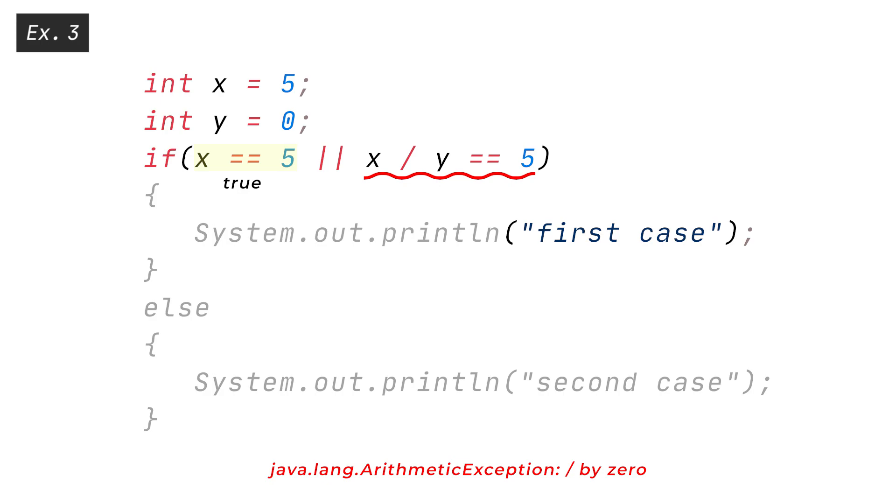While this is a very simplistic example, short-circuiting is very functional in preventing various runtime errors, such as null pointer exceptions AND dividing by 0.